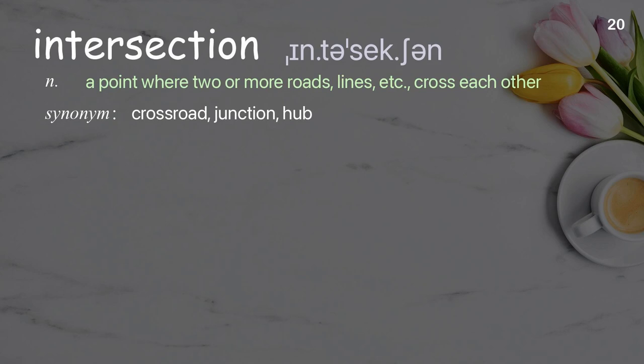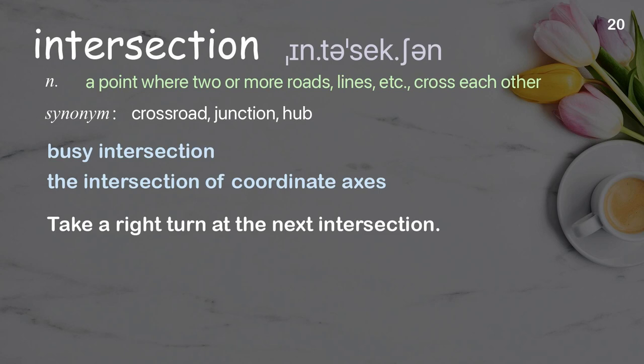Intersection: a point where two or more roads, lines, etc., cross each other. Examples: busy intersection, the intersection of coordinate axes. Take a right turn at the next intersection.